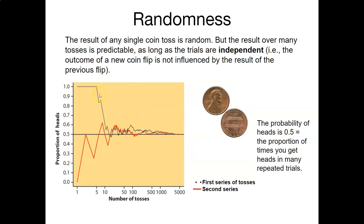In the first series of tosses, we received a lot of heads during our first few tosses. But then we started to receive more tails, and eventually we went down and are now hovering around 0.5 — that is, an equal chance of getting heads versus tails. In the second series, we started off with lots of tails, but eventually, similar to the first series, this began to stabilize as we tossed more and more coins, with the proportion of heads at 0.5.